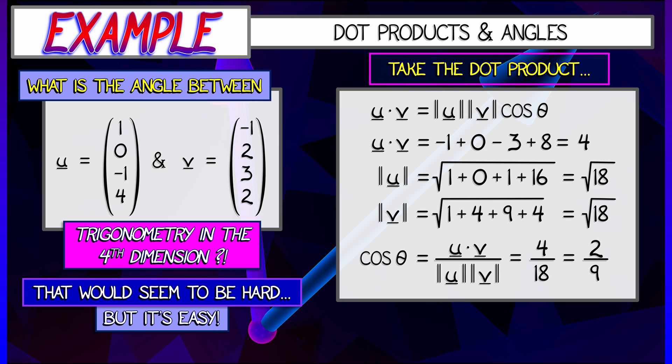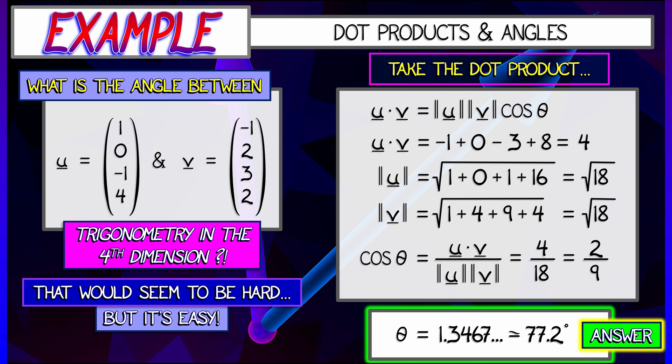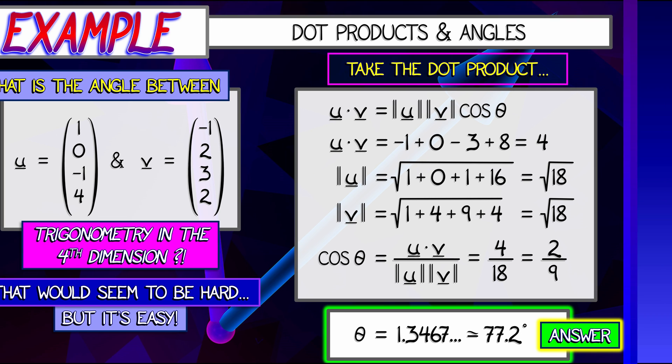Solving for theta, we get that theta is the arc cosine of 2 ninths, which works out to be a little over 77 degrees. And that's it. You can't visualize these vectors, but you can compute the angle between them.